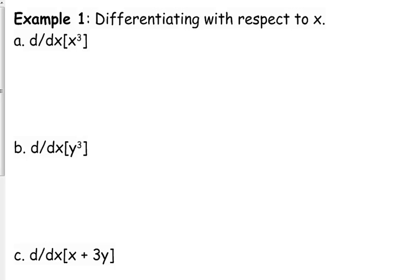If we are taking the derivative of x cubed with respect to x, that's just taking the derivative like we've been doing. The derivative of x cubed is 3x squared. We took the derivative using the power rule, and then the derivative of x is 1. We never write that because it's just multiplying by 1. So the derivative of x cubed with respect to x is 3x squared, just like we've been used to doing.